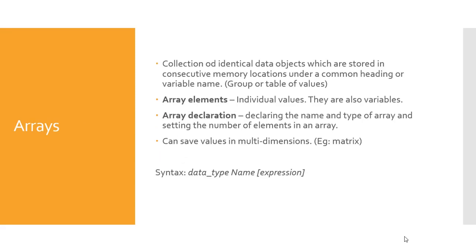Arrays are a collection of identical objects which are stored in consecutive memory locations under a common heading or variable name. So far we have learned about different variables such as int, float, etc. All these variables store only one element — one number, one floating point number, or one character. Today we are learning about another variable which can store multiple elements — multiple numbers or multiple characters stored in the form of rows and columns. Such variables are known as arrays.